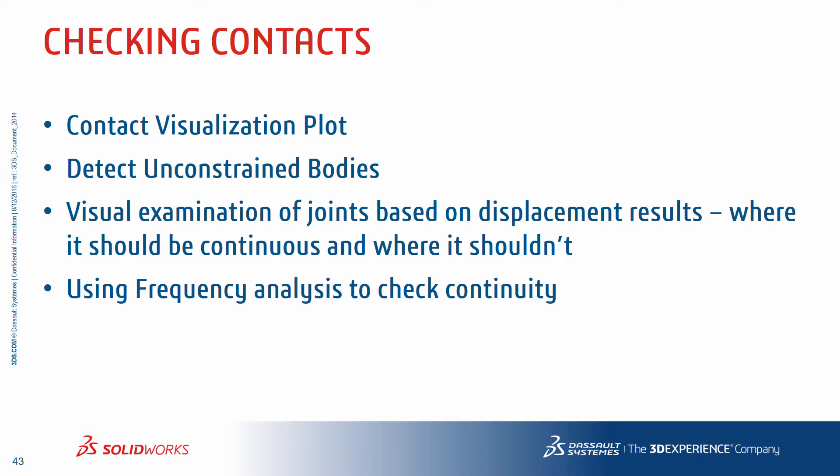That also means turning on soft spring stabilization in the solver properties, solving it, and if you get that large displacement warning, say no — you probably have a rigid body mode. Another way to validate contacts — before we had Detect Unconstrained Bodies we'd use a frequency study. If you have a Simulation Professional license, drag and drop your statics setup over including your contacts and see where the first 20, 30, 40 frequencies are. If you have a rigid body mode you'll just see the thing translate in six degrees of freedom. If a plate is flapping around, you'll catch it at the higher frequencies — it's like shaking the whole thing to make sure it's glued all the way around.